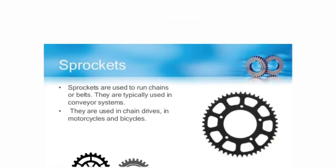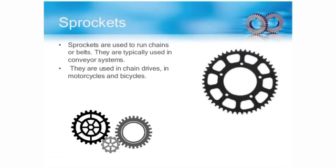A sprocket or chain wheel is a wheel with teeth or cogs, usually found on bicycles, motorcycles, tracked vehicles, and other machinery, to transmit rotational motion between two shafts.